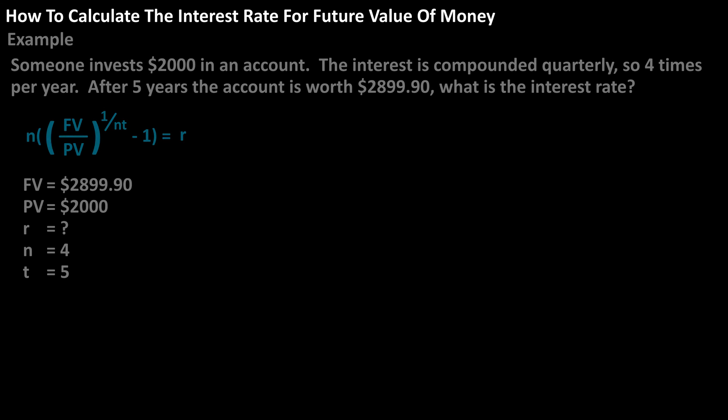As an example, let's say that someone invests $2,000 in an account. The interest is compounded quarterly, so four times per year. After five years, the account equals $2,899.90. What is the interest rate?